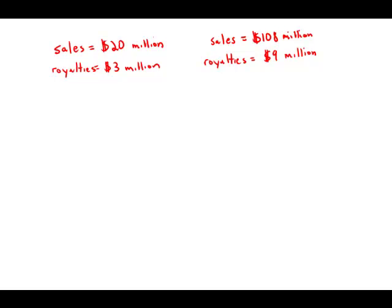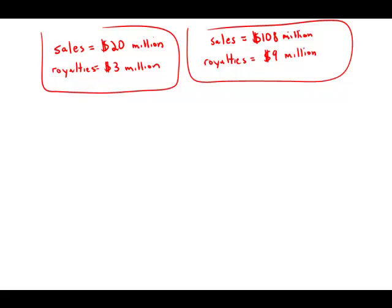By approximately what percent did the ratio of royalties to sales decrease from the first $20 million in sales to the next $108 million in sales? In other words, we have group of sales number one, group of sales number two, what is the percent of decrease of the ratio?